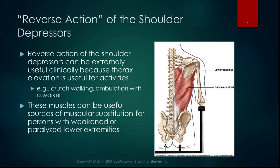These muscles can be really useful sources of muscular substitution for people with weakened, injured, or paralyzed lower extremities. Someone with a spinal cord injury who still has innervation of the upper extremities has much better mobility than someone who doesn't. Many of those shoulder depressors are innervated by early exiting nerves from the brachial plexus, so the lower the cervical spinal cord injury level, the more upper extremity functionality you'll have and the better chance you have of good mobility.